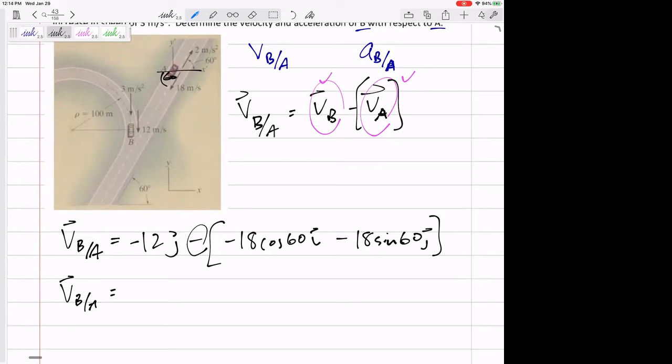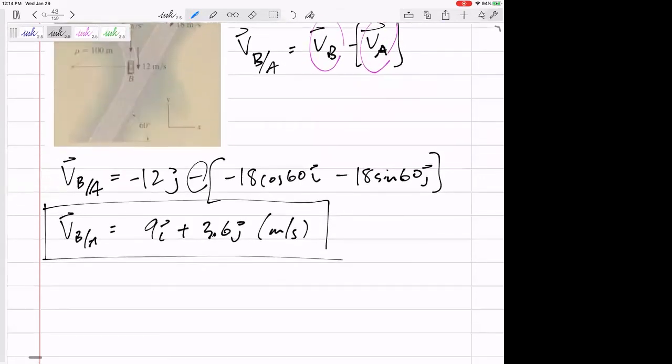So I've got 9I plus 3.6J. I need units. Units were meters per second. Let's leave it like that. If it just asks for velocity, leave it like that as a vector. If it had asked for the magnitude and direction, then I would A squared plus B squared take the square root to get the magnitude and then visualize the direction.